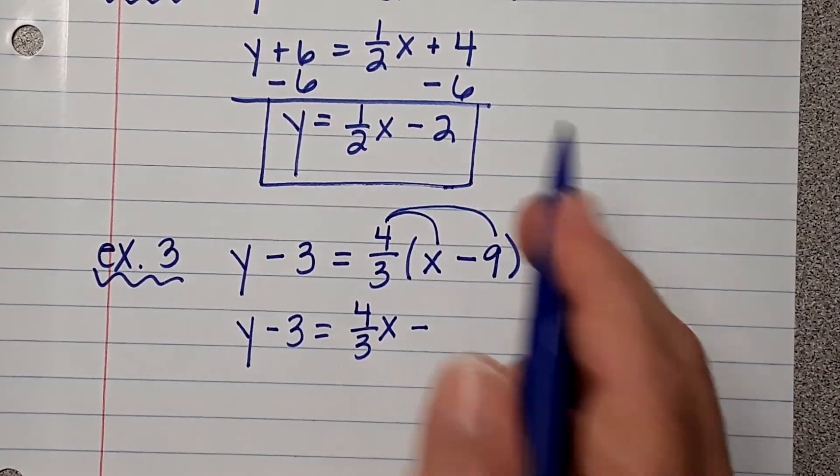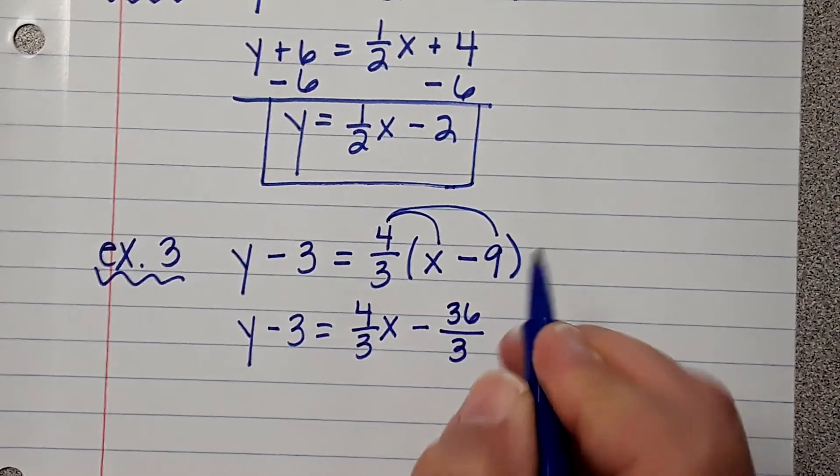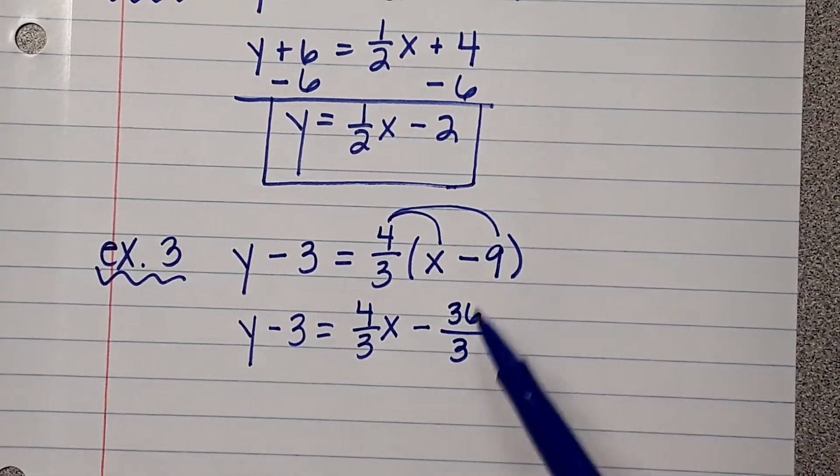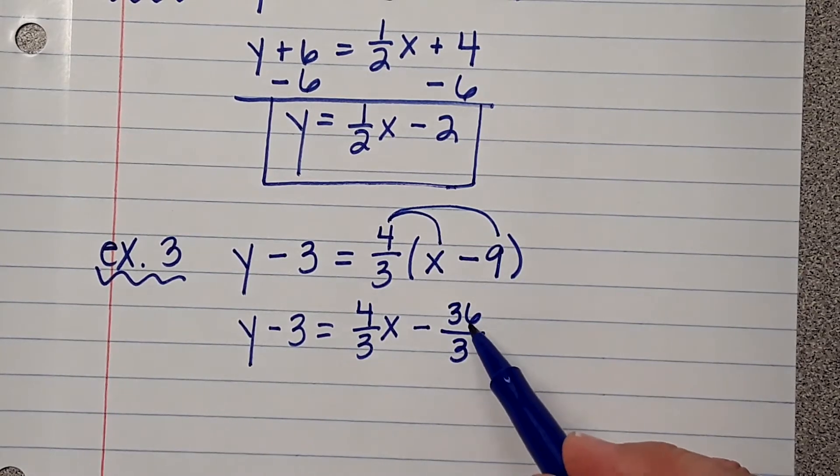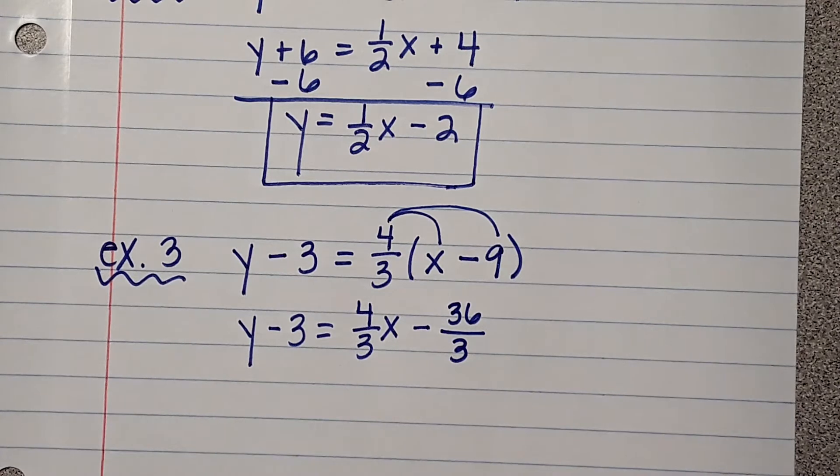4 times 9 is 36. And then just put it over the 3. And now, there's two things that you can do. Well, there's two things that are going to happen. Either you're going to divide evenly. 36 divided by 3 goes in evenly. Or you're going to reduce the fraction.